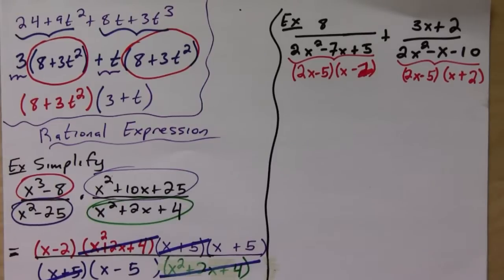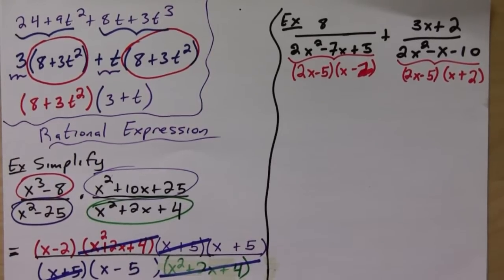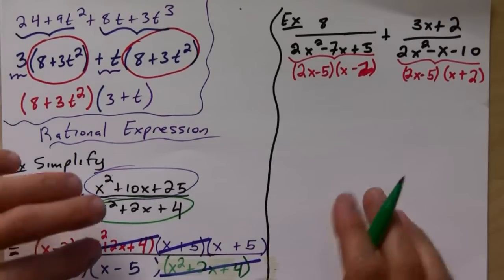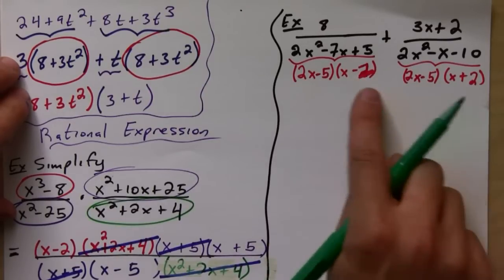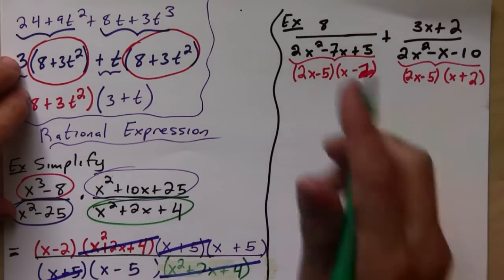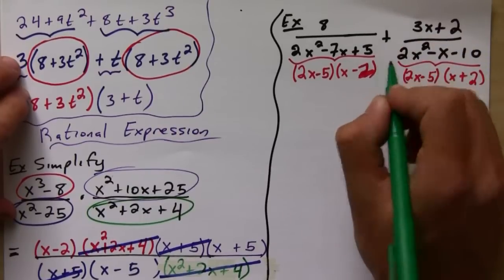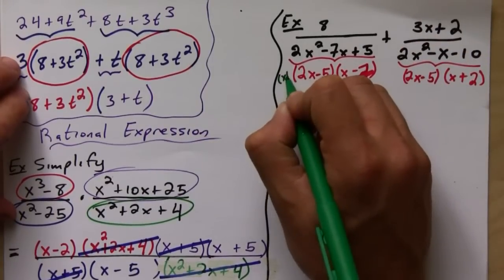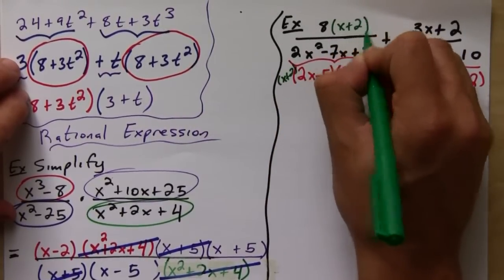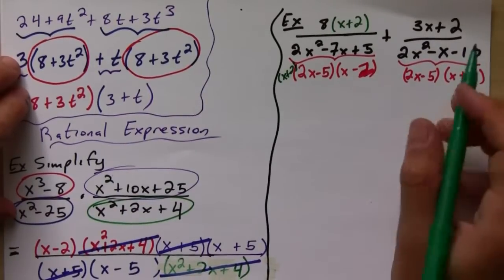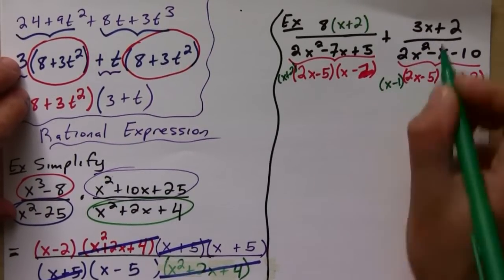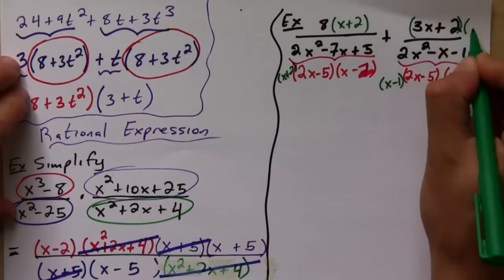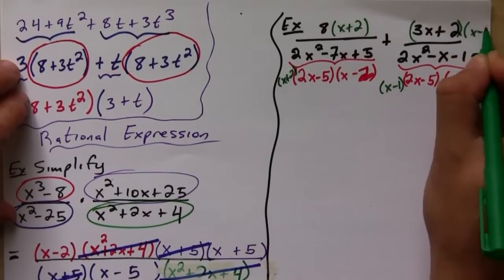Okay, now what we need to do now is figure out what each one needs to be the same. So here, notice we have a 2x minus 5, x minus 1, but it's missing an x plus 2, so we're going to multiply top and bottom here by x plus 2. And on the same note, this one's missing an x minus 1, so we're going to multiply top and bottom by x minus 1.